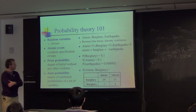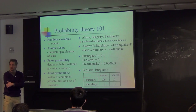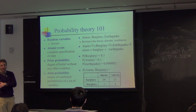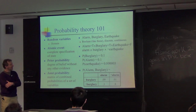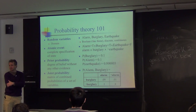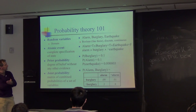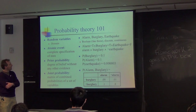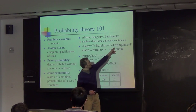Probability theory is made up of several different components. You have random variables such as alarm, burglary, and earthquake — you'll see these in examples throughout the slides. In this case they're Boolean, but they could be discrete or continuous. An atomic event describes a complete world state. For example: alarm equals true, burglary equals true, earthquake equals false. As a shorthand throughout this lecture, if you see a variable written as-is it means true, and the 'not' sign means false. These are conjunctions.